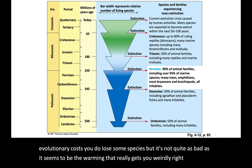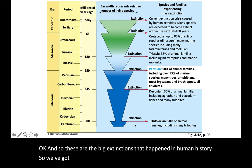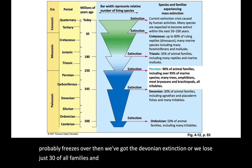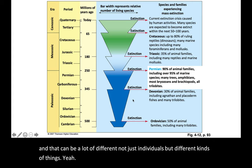These are the big extinctions that have happened in Earth's history. We've got the Ordovician extinction — that's a cold event; the world probably freezes over. Then we've got the Devonian extinction, where we lose just 30% of all families. To lose a family, you have to lose every member of every species and every genus in that family, which could be hundreds of species going extinct at the same time. This one was caused by, we think, a combination of algae and plants.